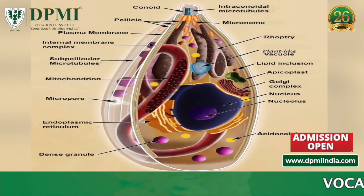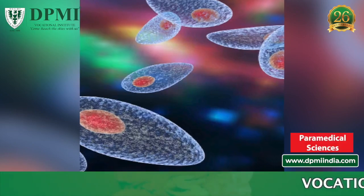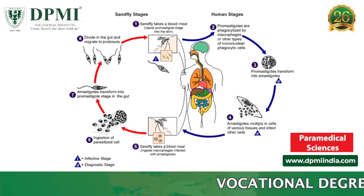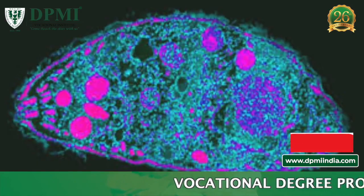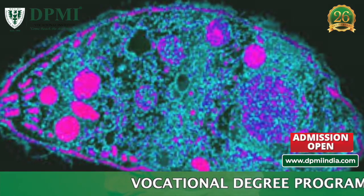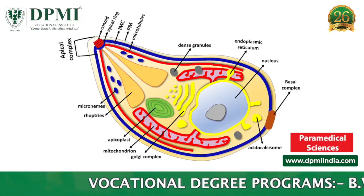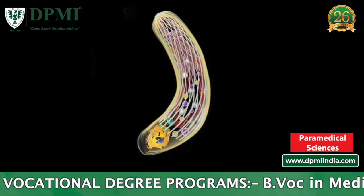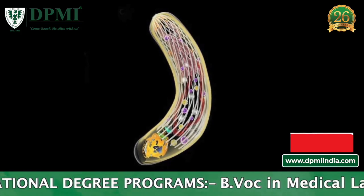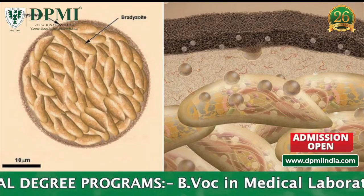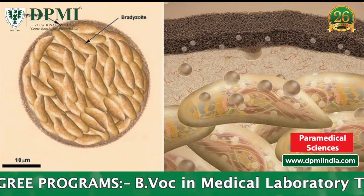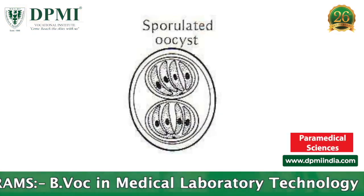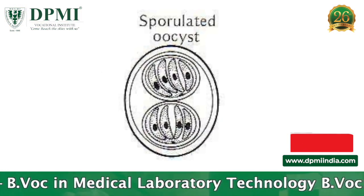Toxoplasma gondii is an obligate intracellular parasite affecting a wide range of mammals and birds, including humans. The name Toxoplasma is derived from the Greek word toxon, meaning arc or bow, referring to the curved shape of the trophozoites that are tachyzoites. It exists in three morphological forms: two asexual forms, tachyzoite and tissue cyst, and one sexual form, the oocyst.